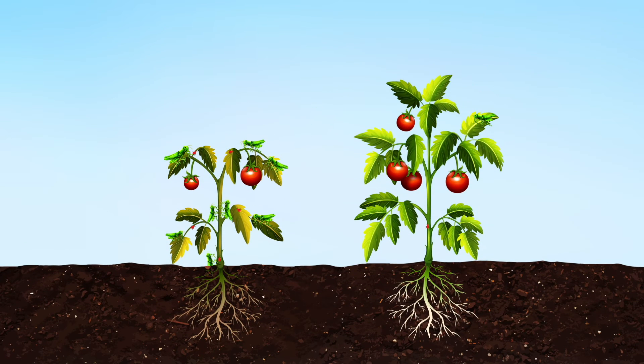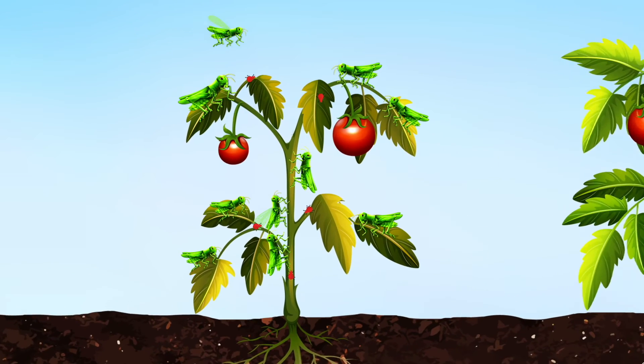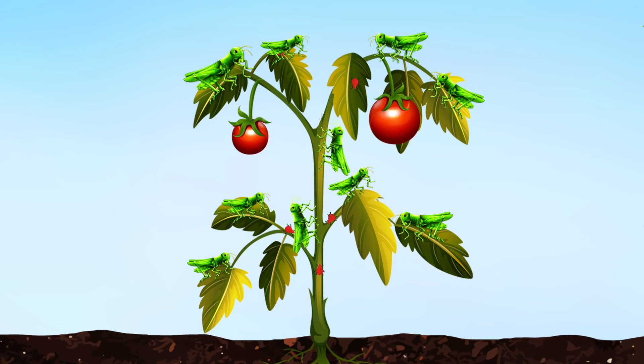Healthy plants produce chemicals that deter pests, whilst plants that are stressed are less able to do this, and so they're more susceptible to attack.